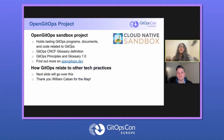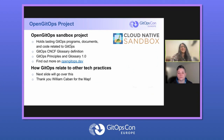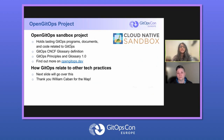Open GitOps is a CNCF sandbox project to define a vendor-neutral, principle-led meaning of GitOps. This will establish a foundation for interoperability between tools, conformance, and certification through lasting programs, documents, and code. OpenGetOps.dev is the website to find out more about the Open GitOps project and also get involved in the GitOps working group as well.